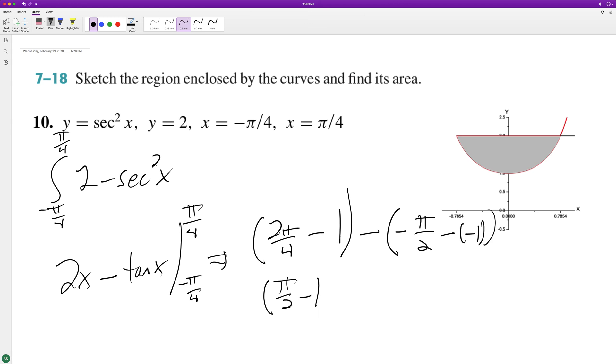Actually, I'm gonna get rid of these. This becomes plus pi over two, that becomes a plus, and then minus one again, so we have pi minus two.